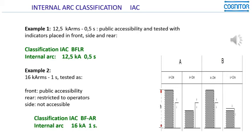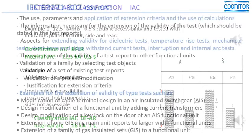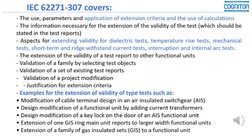If it was tested this way under the rules of IEC 62271-200, it would remain valid even after a modification — such as a cable terminal design change in one AIS. This is a simple modification, but under today's view, if something is modified, many times the user considers it a new equipment and wants to retest. This can be avoided by this new IEC document.